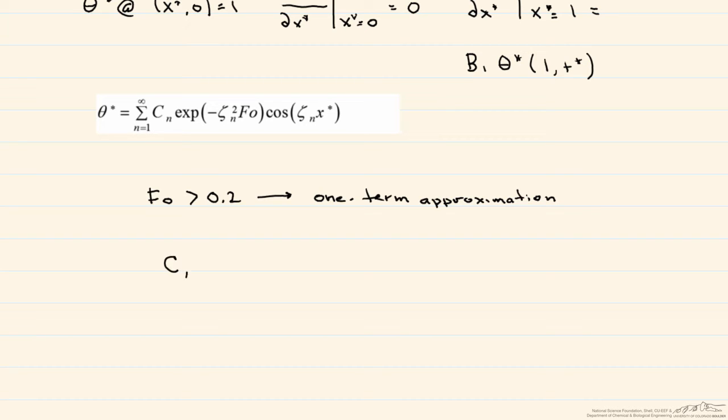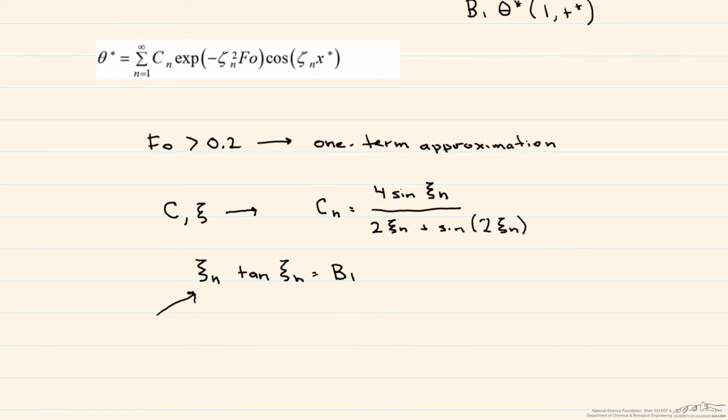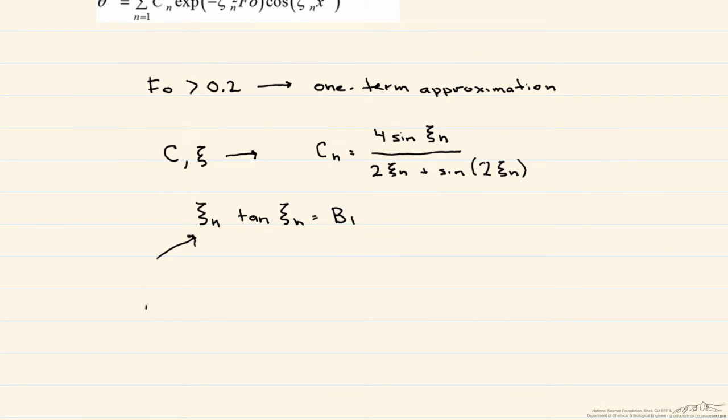So what are these? So this term is an eigenvalue, and our constant is a function of that eigenvalue. So let's take a look at what the one term approximation looks like. And we'll write it out in terms of what we're interested in. So t minus t infinity divided by ti minus t infinity is equal to c1 times the exponential of this first eigenvalue squared times the Fourier number,